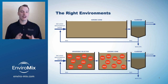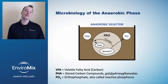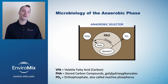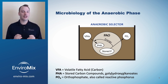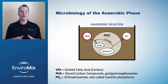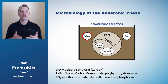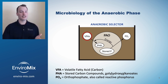Here's how it works. In the anaerobic phase, PAOs consume carbon through volatile fatty acids, or VFAs. Other microbes require oxygen to consume carbon and grow, but PAOs, as their name suggests, have stored phosphorus they can use in the absence of oxygen to take up carbon.